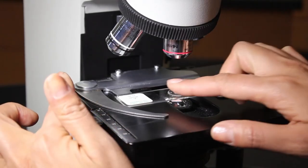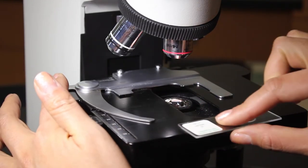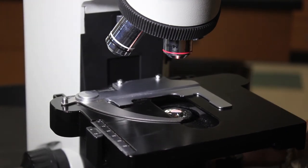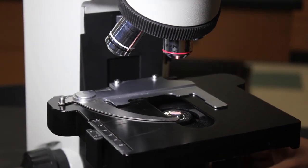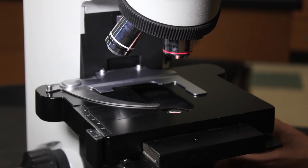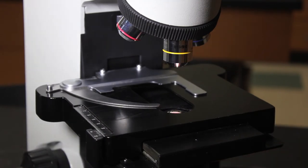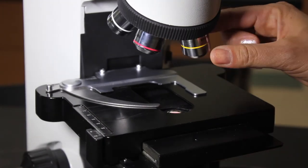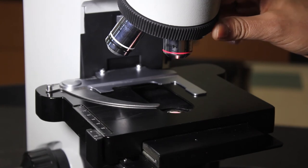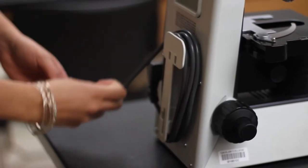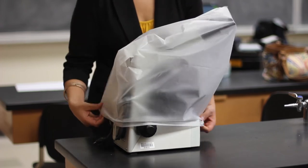When you are finished using the microscope for the day, remove slides and return them to the appropriate slide box. Lower and move the stage back towards the arm of the microscope. Rotate the revolving nose piece so the scanning objective lens is in place. Wind the cord neatly and replace the dust cover.